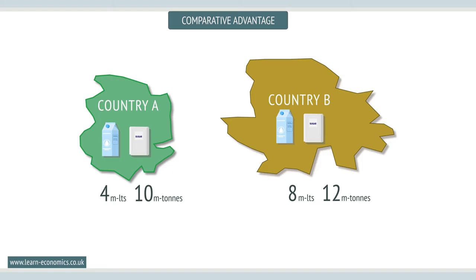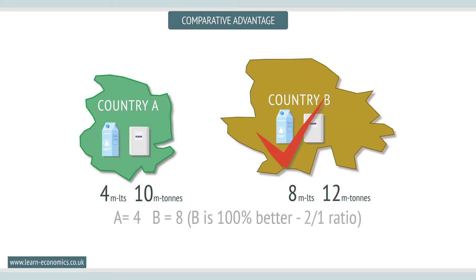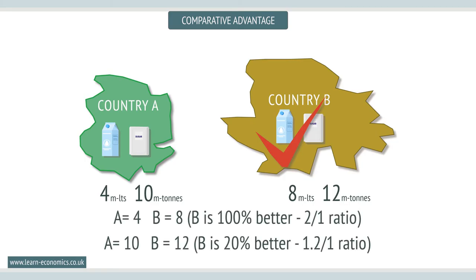Clearly, B is better at both and has an absolute advantage over A. So, should they trade? Well, in comparative terms, B has an advantage in terms of milk — it is 100% more productive in milk, but only 20% better at sugar production. So, in terms of the principle of comparative advantage, they should trade, with B specializing in milk and leaving A to produce sugar.